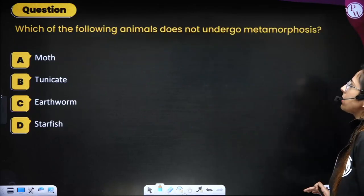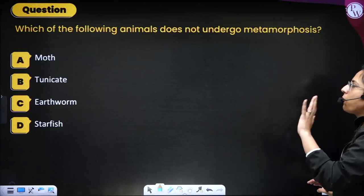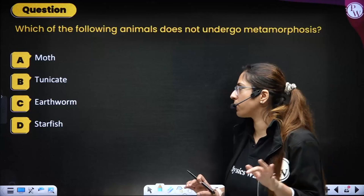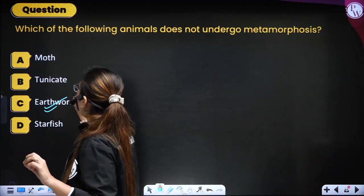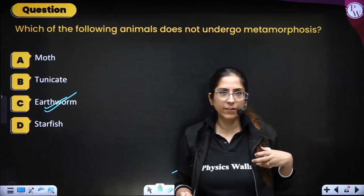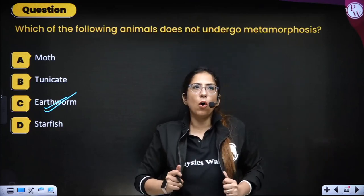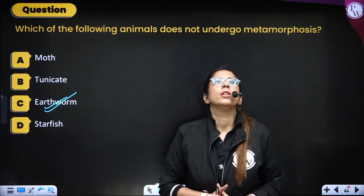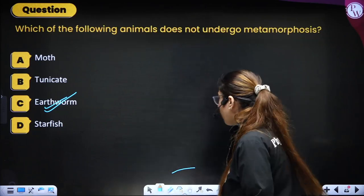Next question: which of the following does not show metamorphosis? Correct option is earthworm — earthworm does not show metamorphosis. Whereas moth, tunicates, and starfish all show metamorphosis. Earthworm does not.